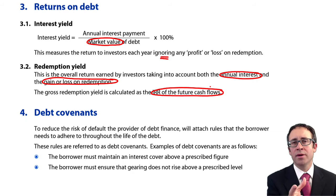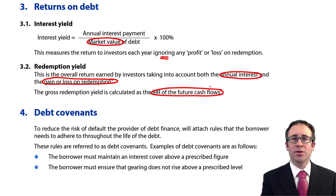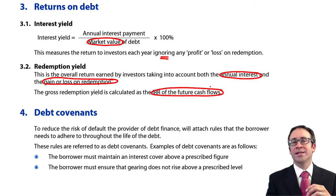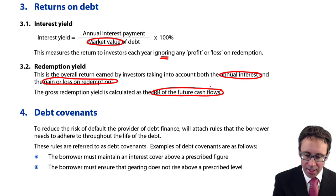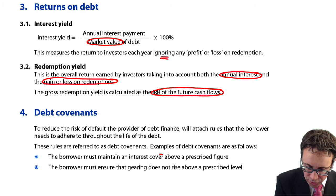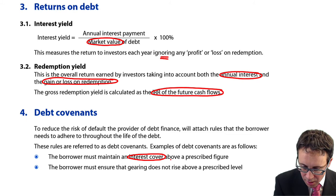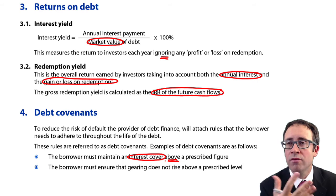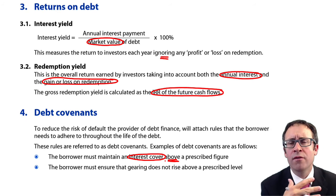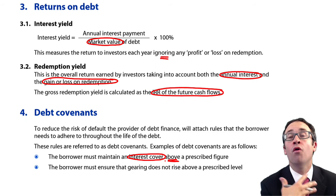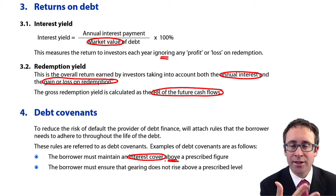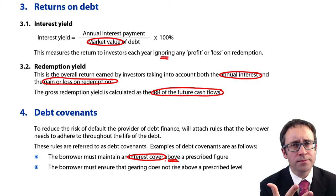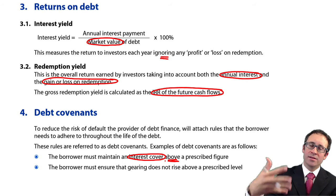So we want to make sure that if we're talking about debt, the company has enough cash or profit to be able to pay the interest. That's why we might set a covenant — a rule stating you must maintain an interest cover figure above a prescribed level. For example, you may have to maintain interest cover above four, meaning profits before interest and tax need to be four times the interest expense. If it gets to three, you've broken the covenant and the loan will be foreclosed. If it's five, six, seven, or eight, you'll be fine.